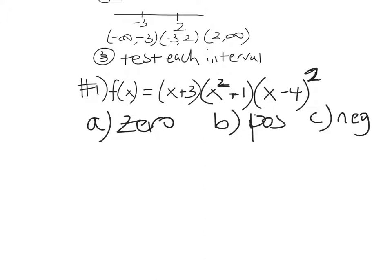So the first thing they want us to do is find the zeros. Looking at the first factor, x plus 3, negative 3 would be a zero. The next one might try to confuse you — x squared plus 1, that's a plus. Is that ever going to be 0? No. There's no real zeros there; there's plus and minus i, but we're only doing real numbers. And then finally, x minus 4 squared — 4 would be a zero. So this polynomial has only two real zeros. It is a fifth degree polynomial, but it only has two real zeros; it has two imaginary zeros also.